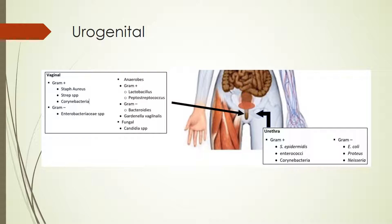Our last stop is the urogenital region, split into two groups: the normal vaginal flora and the normal flora of the urethra. For the vaginal flora, we've got gram-positives like Staph aureus, Strep species, and Corynebacterium, and gram-negatives like Enterobacteriaceae. Anaerobes are also common — Lactobacillus, Peptostreptococcus, Bacteroides, and Gardnerella — and fungal species are frequently isolated as well. For the urethra, we find gram-positives like Staph epidermidis, Enterococci, and Corynebacterium, and gram-negatives like E. coli, Proteus, and Neisseria. Empirically, for the vaginal flora we focus on anaerobes, and for the urethra we focus on gram-negative pathogens.